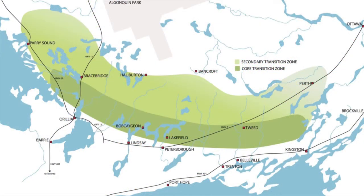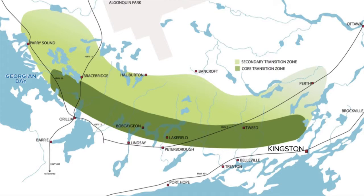When you overlay a more simplistic map, you can see that from an ecological perspective, the transition zone is fairly broad — from Georgian Bay over to roughly Kingston. For those of you from Ontario, you'll recognize this band as cottage country: the Kawarthas, Muskoka, and Haliburton are all situated in the Land Between. It's a fundamentally important geographical area for both recreation and biodiversity.